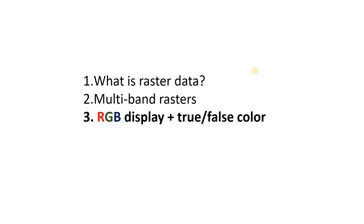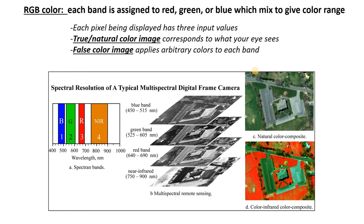If we have a multi-band raster, we can then use what's called RGB color to display the image. In RGB color, we take three bands and assign one to red, one to green, and one to blue, and then mix those to give a specific color.